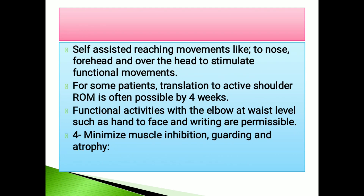Add self-assisted reaching movements like nose, forehead, and over the head to stimulate functional movements such as combing, washing the face, and eating. Transition to active shoulder range of motion is often possible by four weeks. Functional activities with the elbow at waist level, such as hand to face and writing, are permissible.